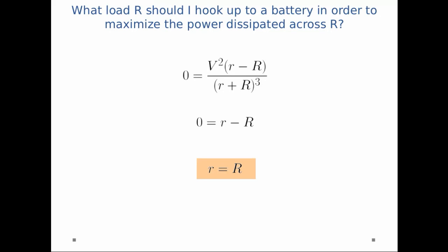And so we get little r is equal to big R. That means that whenever you have the load resistance equal to the internal resistance, you get maximum power dissipated across the load.